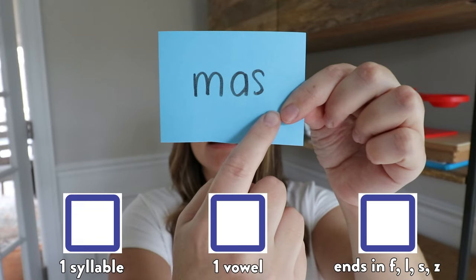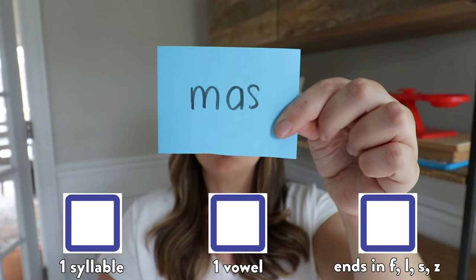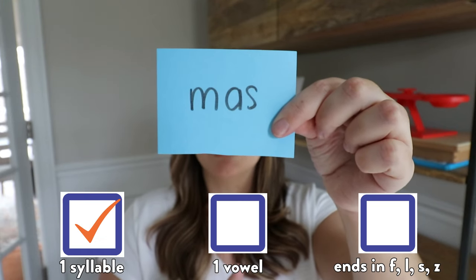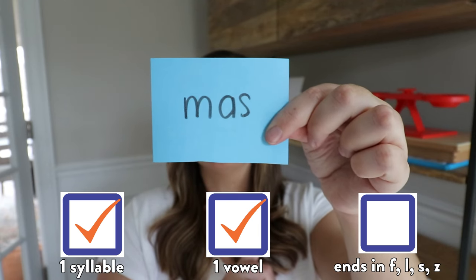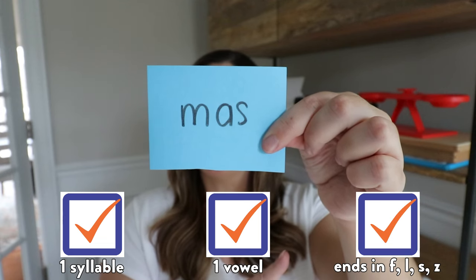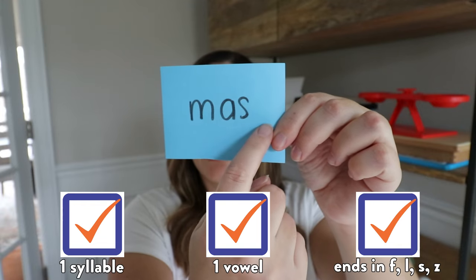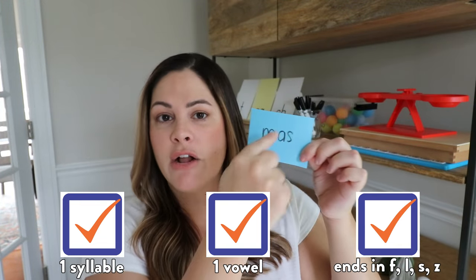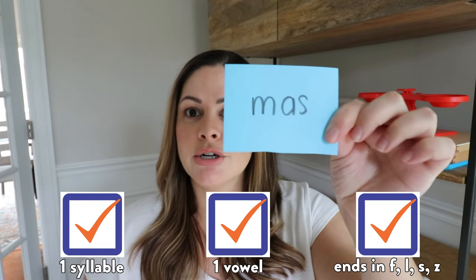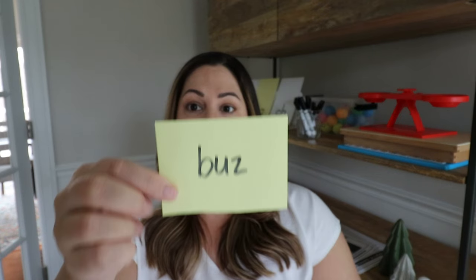Here's another one: M-A-S, mass. Do I need to double that S? Let's check. One syllable — yes, check. One short vowel A — yes, check. Does it end in one of those four sounds — yes. So when we write mass, we double that S. You can have students show thumbs up or thumbs down, but make sure they explain why or why not the ending consonant gets doubled based on the 1-1-1 rule — they need to prove or disprove it.